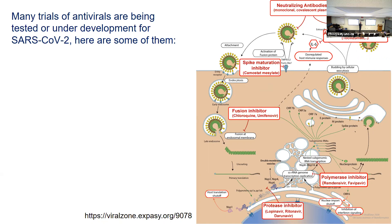There are a whole bunch of treatments for SARS-CoV-2 in the pipeline. This infographic from ViralZone shows inhibitors targeting different stages of the virus life cycle. The key is finding things that bind viral enzymes that are unique from human ones. We'll also talk later about monoclonal antibodies — those are not exactly antiviral drugs, they're more of an immune-based approach, and we'll get to that when we cover the immune system.